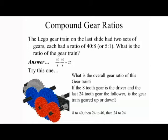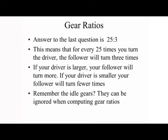What is the overall gear ratio of this gear train? If the 8-tooth gear is the driver and the last 24-tooth gear is the follower, is the gear train geared up or down? The steps are: 8 to 40, then 24 to 40, then 24 to 24. The answer is a ratio of 25 to 3 — for every 25 turns of the driver, the follower turns 3 times. If your driver is larger, your follower turns more; if your driver is smaller, your follower turns fewer times. Remember that idler gears can be ignored when computing gear ratios.